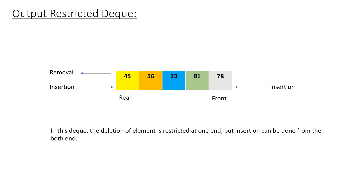In the output restricted Deque, the removal or deletion of the element is restricted, but insertion or addition of the element can happen from both ends. We can choose any one side for removal — either the rear end or the front end. Once we decide which end we have chosen, we cannot switch it. Insertion can happen from any end. These are the two types of Deque.